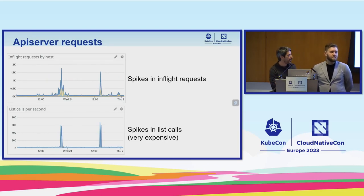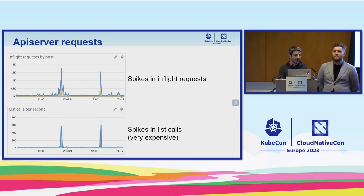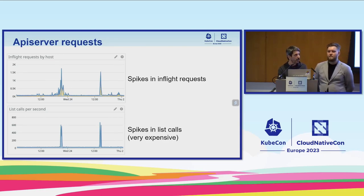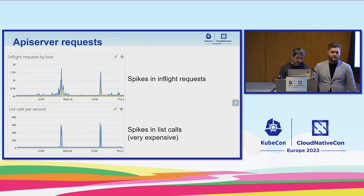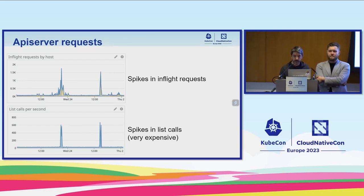We started looking at API server metrics, particularly at the number of requests. During the two incidents, the number of in-flight requests was very high — typically around 100, but during the incident it spiked above 1,000. Especially notable was a very big spike in list calls. We're going to talk a lot about these calls because they can be very expensive for your clusters, especially large ones.